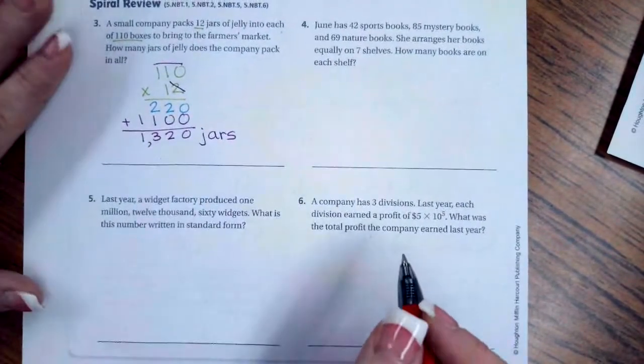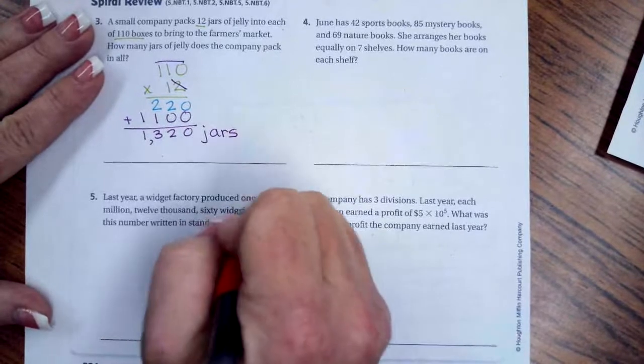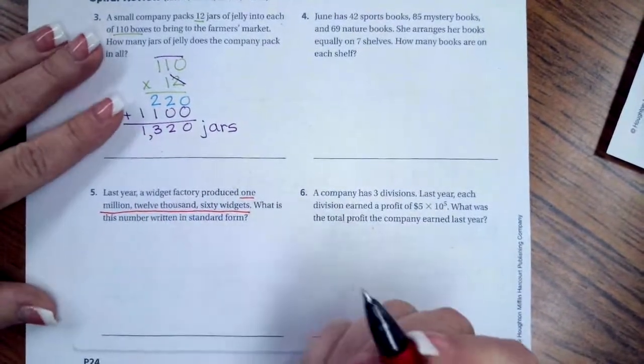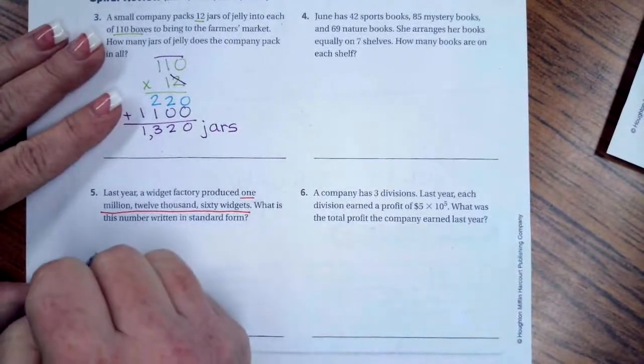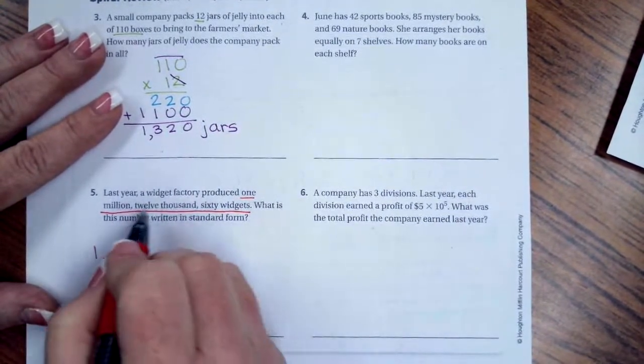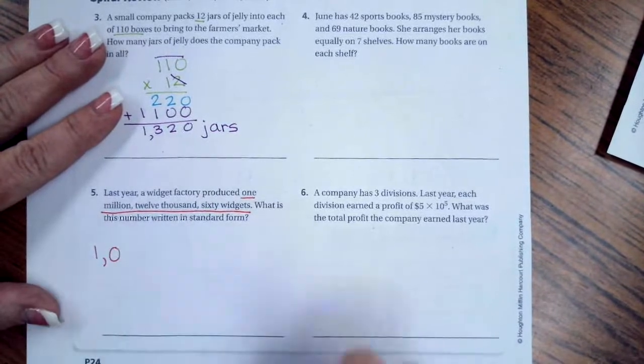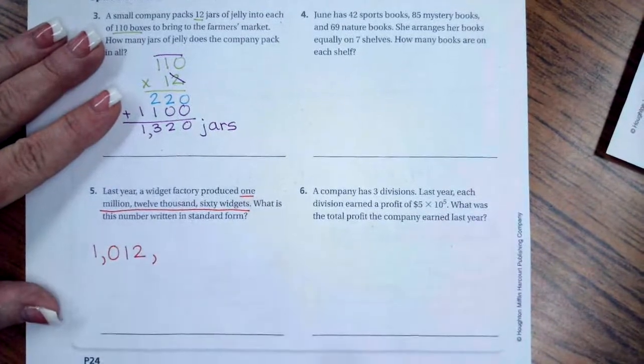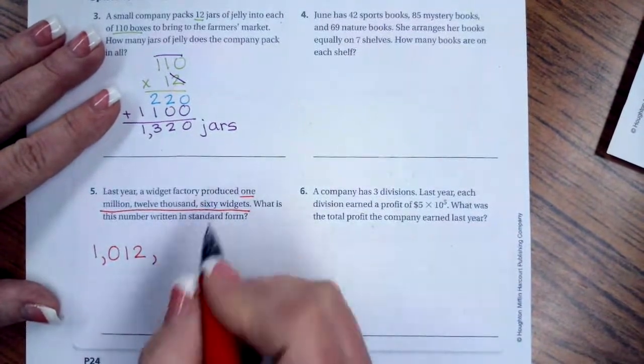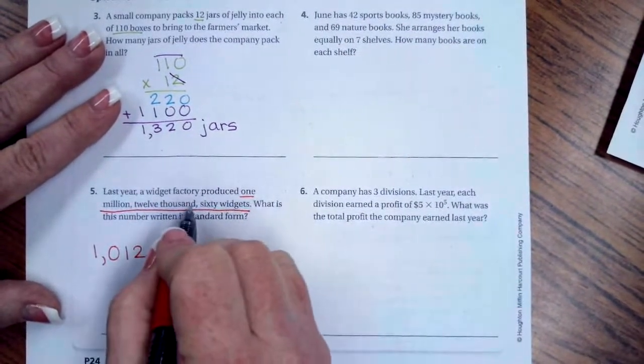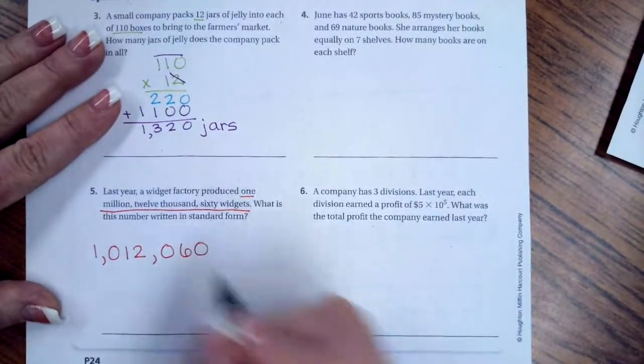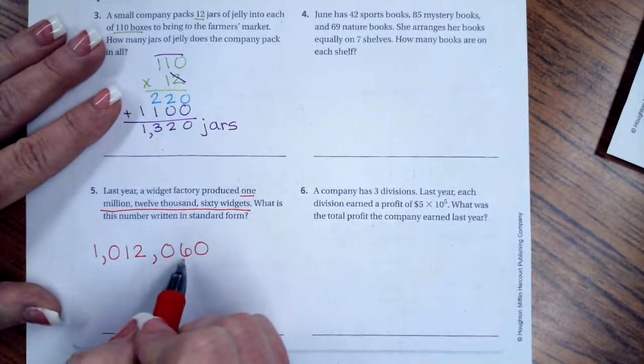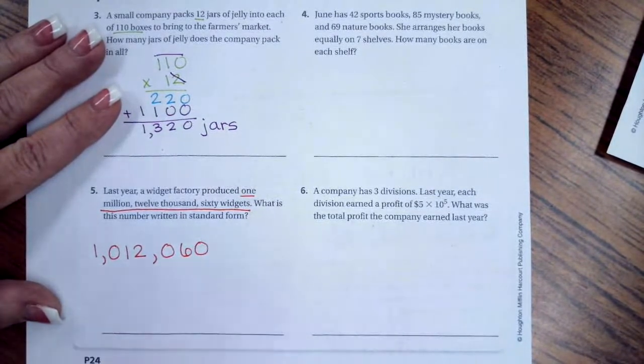Number 4. Last year, a widget factory produced 1,012,060 widgets. What is this number written in standard form? So 1,012,000. That means I don't have a number in my 100,000s place, but I have 12,000 and 60 widgets, which also means I don't have a number in my 100s place, but I have 60. So 1,012,060 widgets.